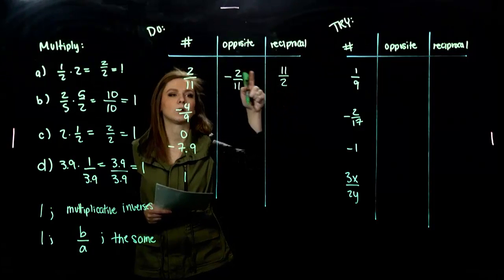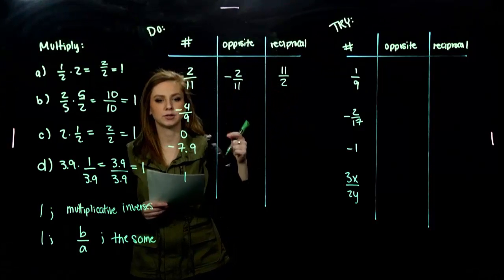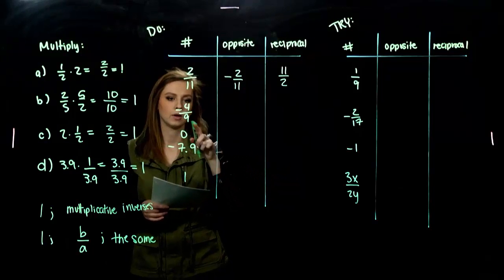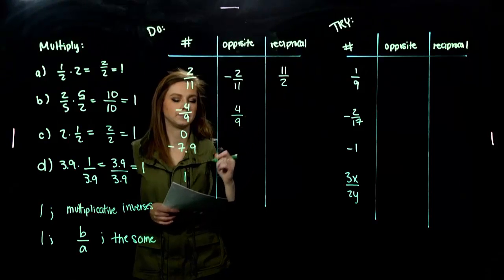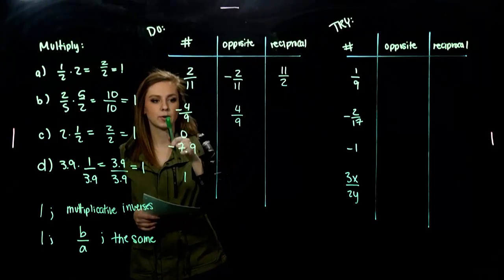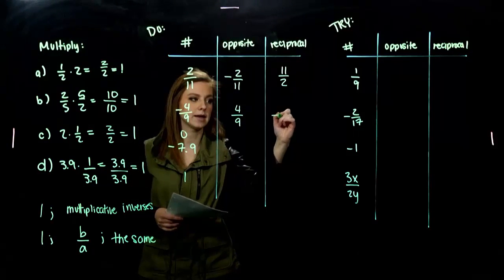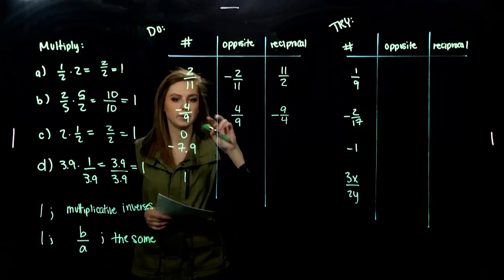So, same sign. The reciprocal is always the same sign. The opposite is always the opposite. Negative 4 ninths. Its opposite is going to be positive. And, the reciprocal of this negative number is going to be negative 9 over 4. Flipping it upside down.